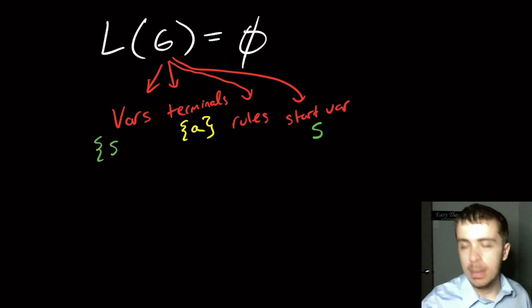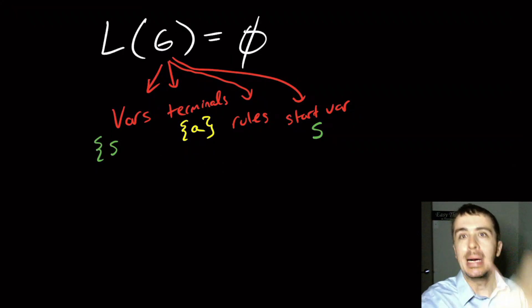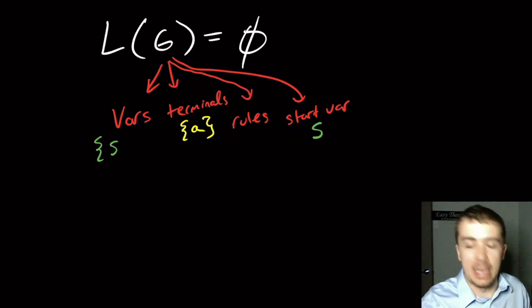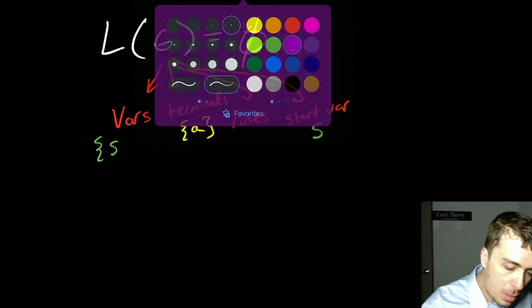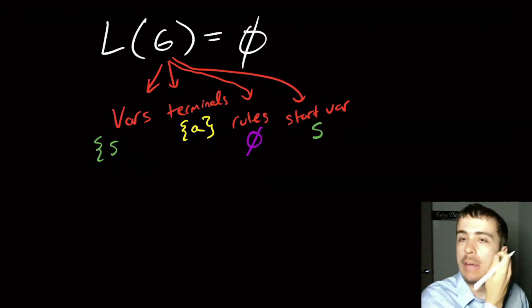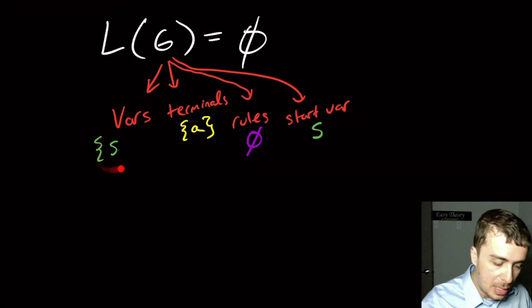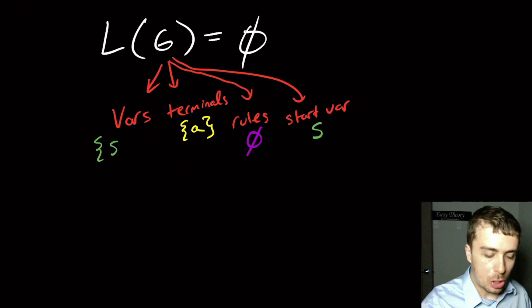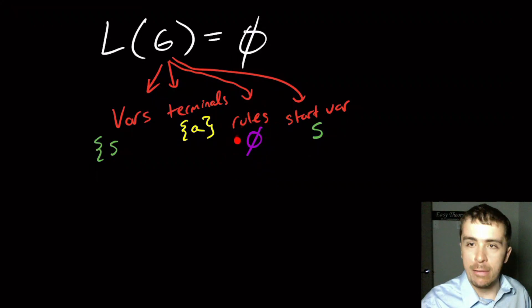And for the rule set, it actually might matter based on the definition, whether you must have a rule or you don't have to have a rule. If we're allowed to not have a rule, like no rules whatsoever, then we're already done, because it doesn't matter what they have. As long as there's no rules, then I can't apply anything from the start variable, which means I can't get a string of terminals anyway.